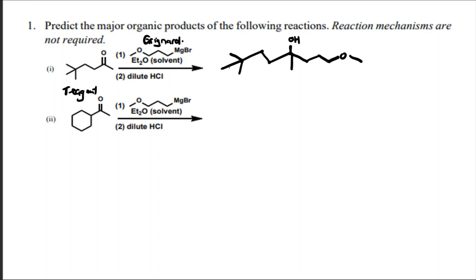This is going to be the predicted product, plus the chloride in solution that remained, plus the magnesium bromide. So this is going to be the product of this reaction.